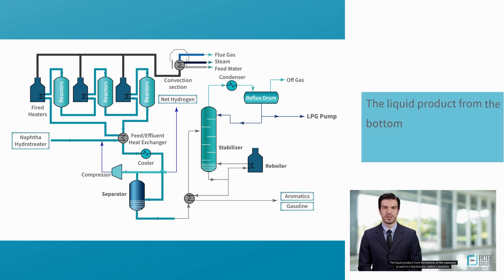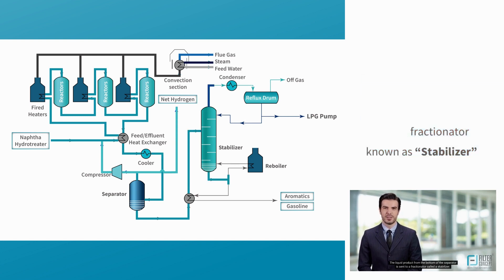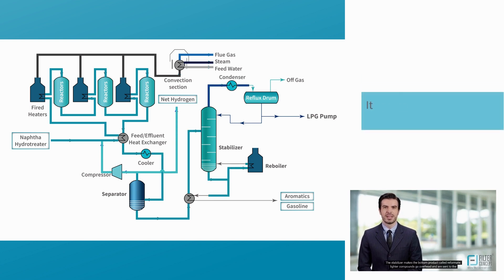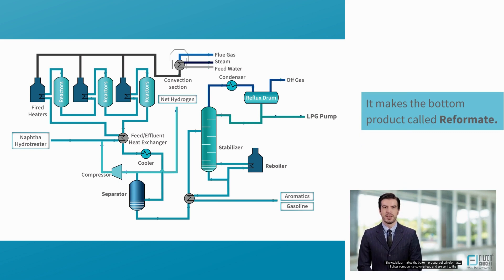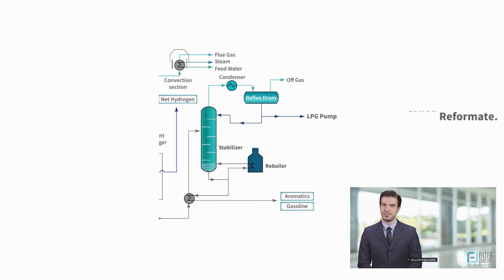The liquid product from the bottom of the separator is sent to a fractionator called a stabilizer. The stabilizer makes the bottom product called reformate. Lighter compounds go overhead and are sent to the saturated gas plant.